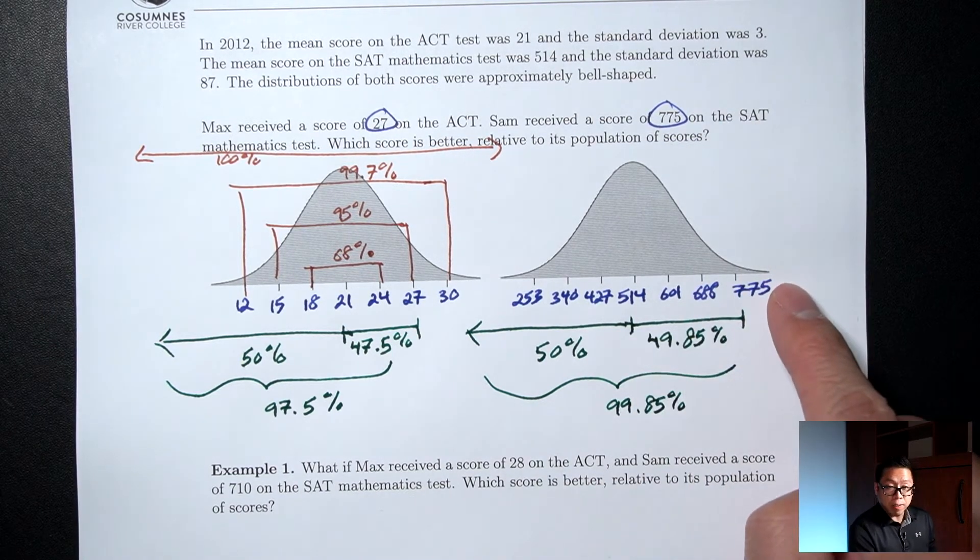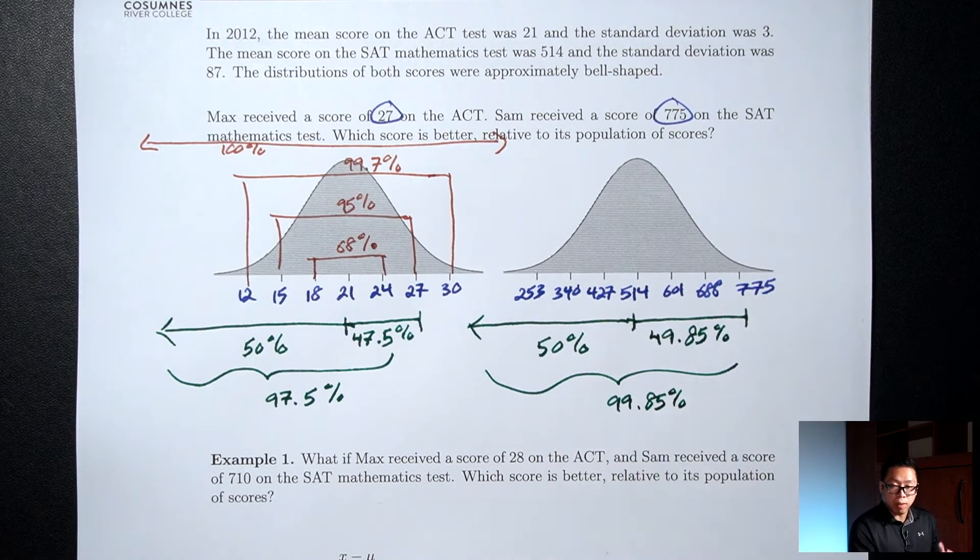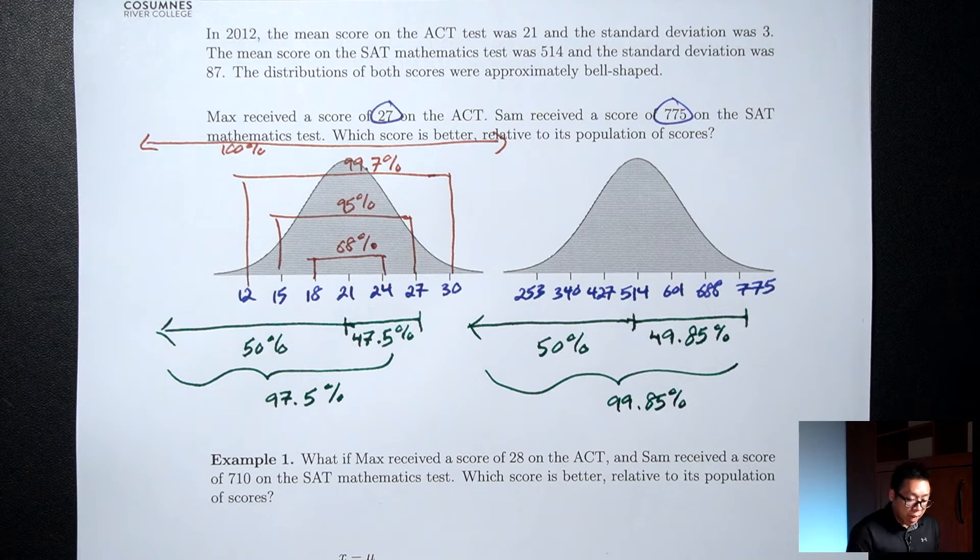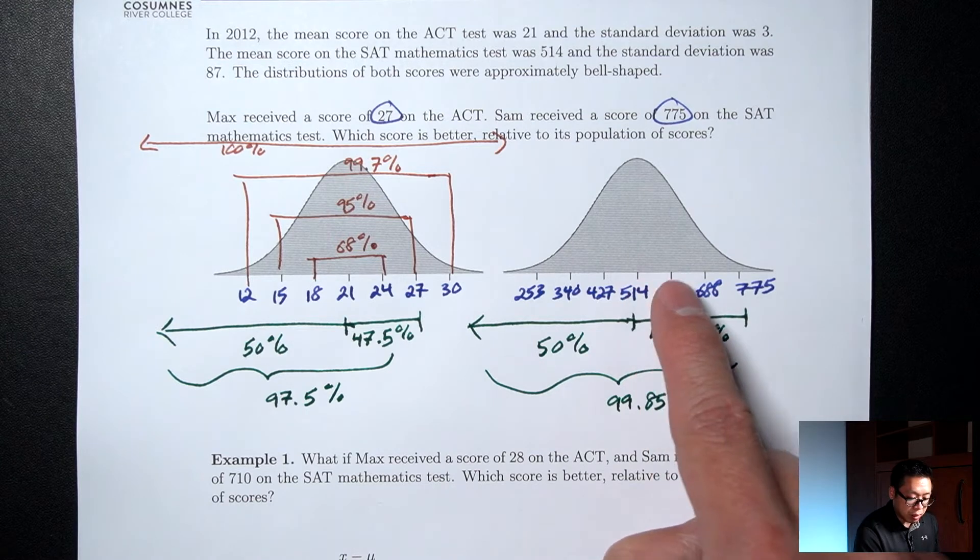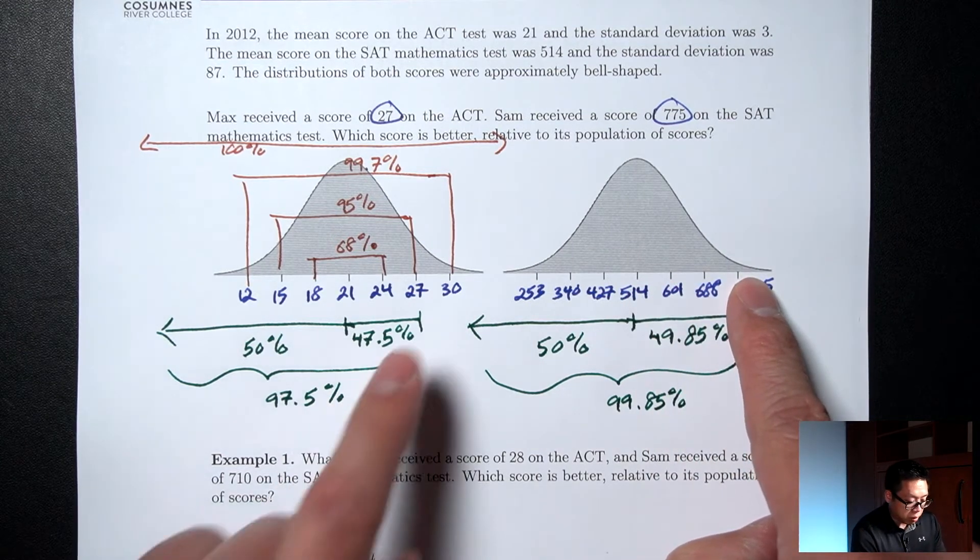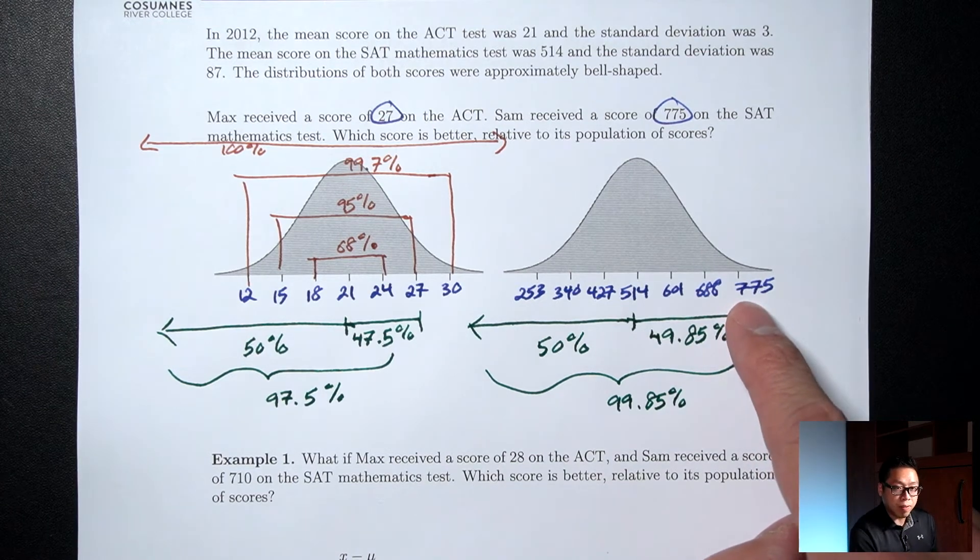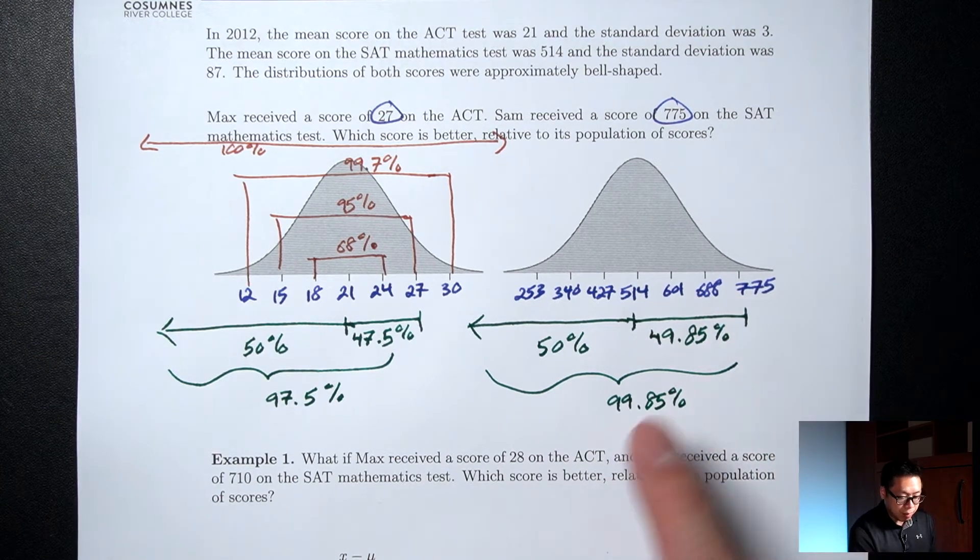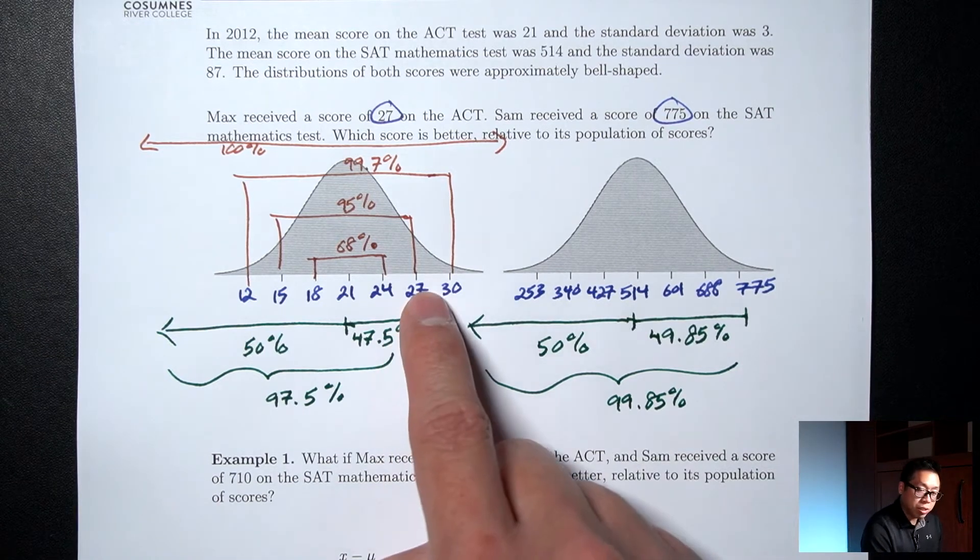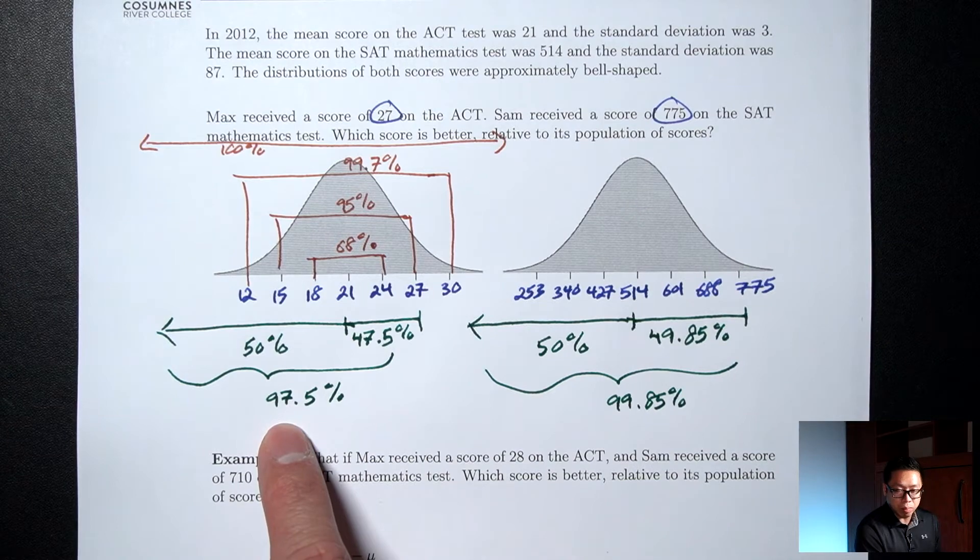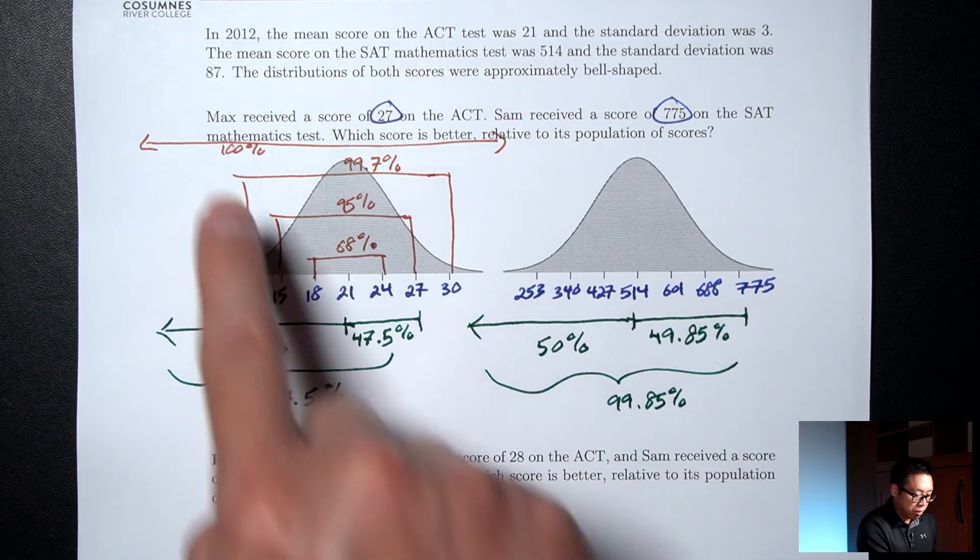So Sam, who got the 775, his score was higher than 99.85% of all test takers. So it is valid to say that 775 is better than 27 because it's 3 above versus 27 which is only 2 above. And in particular, it's valid because 775 is better because it beats 99.85% of the people who took it, whereas 27 only beat 97.5% of the people who took the test. In other words, Sam beat more people than Max.